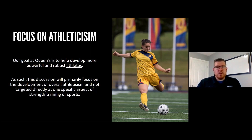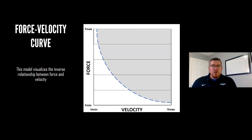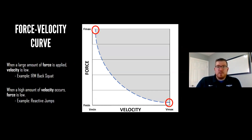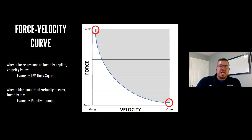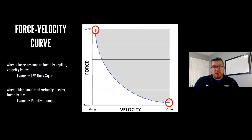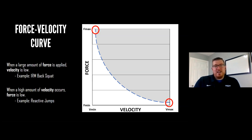The force-velocity curve is a model that visualizes the inverse relationship between force and velocity. On one side we have force, on the bottom we have velocity. When force output is really high, velocity is going to be really low — for example, a one-rep max back squat. When you're grinding out a squat, force output is really high and velocity is pretty low.